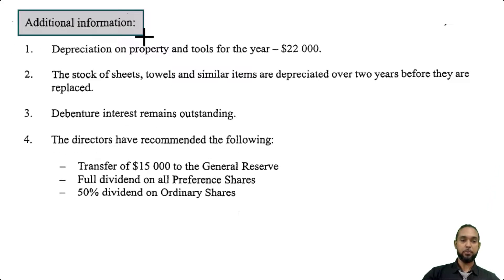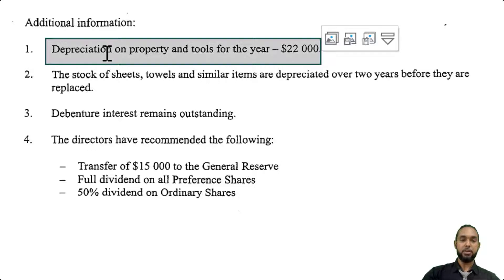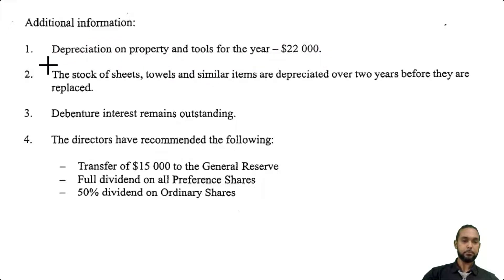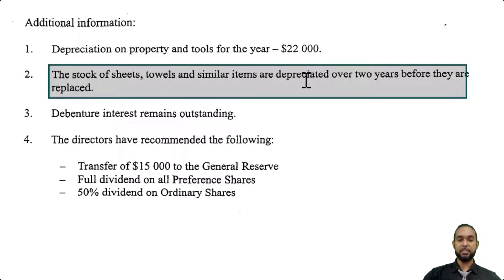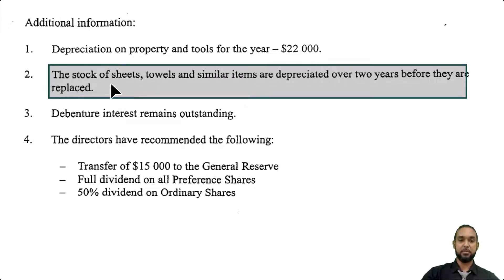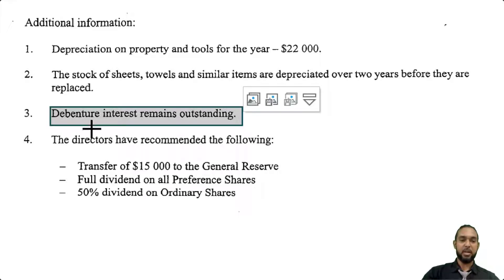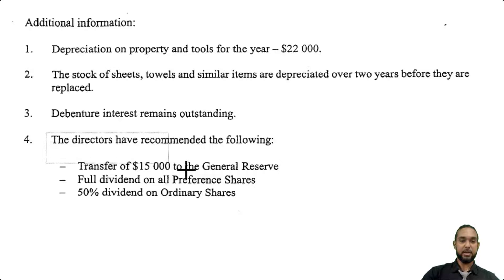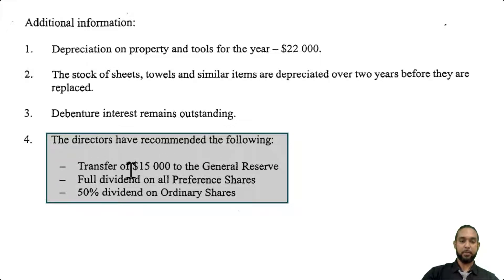We have four items of additional information. First, depreciation on property and tools for the year is $22,000. Second, stock of sheets, towels and similar items are depreciated over two years before they are replaced — they were purchased December 1st, 2008, so we divide $22,000 by 2 to get $11,000. Third, debenture interest remains outstanding. Fourth, the directors have recommended: transfer $15,000 to the general reserve, full dividend on all preference shares, and a 50% dividend on all ordinary shares.